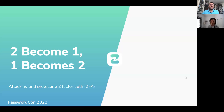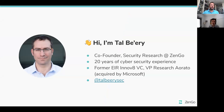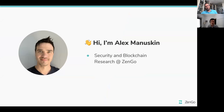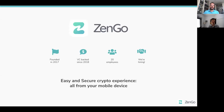Hello and welcome to our talk: 'One Becomes Two' — attacking and protecting two-factor authentication. We're happy to be here, even if virtually, at PasswordCon 2020. My name is Tal Berry, co-founder of Zengo, developing a secure and easy cryptocurrency wallet. And I'm Alex, a security and blockchain researcher at Zengo. As I said, Zengo is a VC-backed startup doing an easy, secure crypto experience from the mobile device — and you'll soon find out how it's all connected to two-factor authentication.